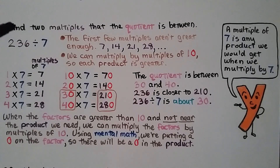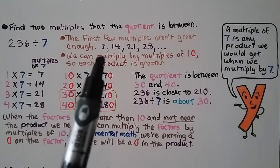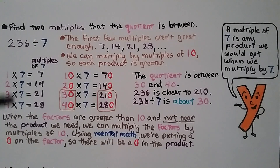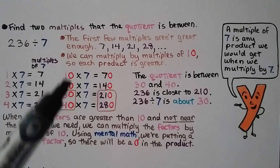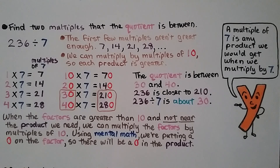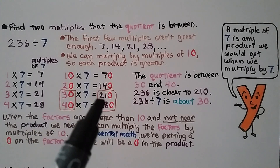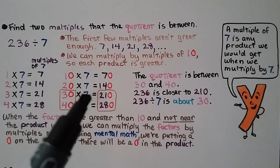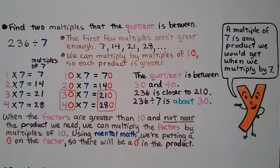We need to find two multiples that the quotient is between. We have 236 divided by 7. The first few multiples aren't great enough: 7, 14, 21, 28 — that's very far away from 236. So we can multiply by multiples of 10: instead of 1, 2, 3, 4, we multiply by 10, 20, 30, 40. That puts a zero in the factor and a zero in the product, making them greater. 30 times 7 is 210, and 40 times 7 is 280, so the quotient is between 30 and 40. Since 236 is closer to 210, 236 divided by 7 is about 30.